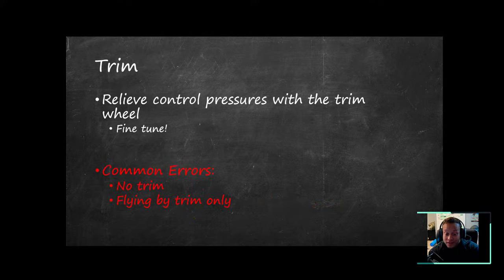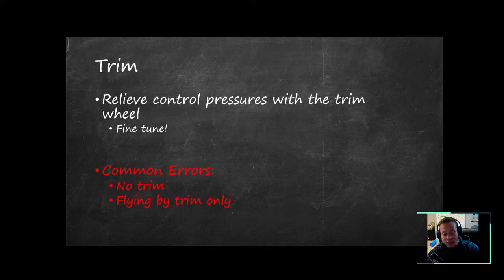We establish the aircraft: nose on the horizon, wings level, power set. Then we trim off those pressures — you should be trimming all the time. My private pilot students do trim day one. Trim the control pressures off so that you can take your hands off the controls and the airplane stays where you put it. Common errors: not trimming the airplane, or using too much trim and flying by trim only.